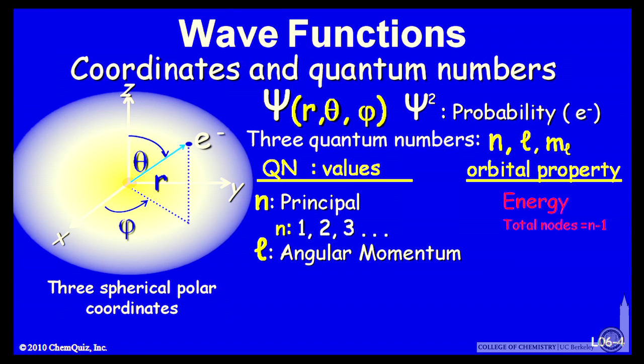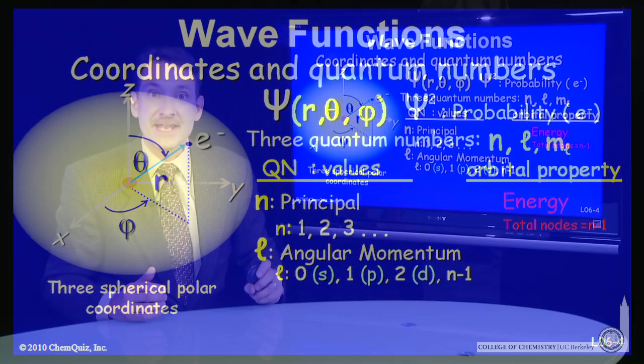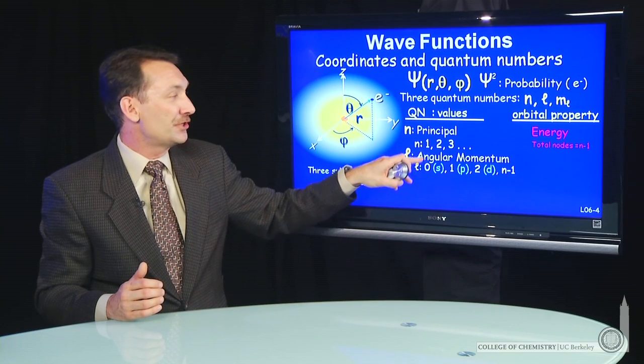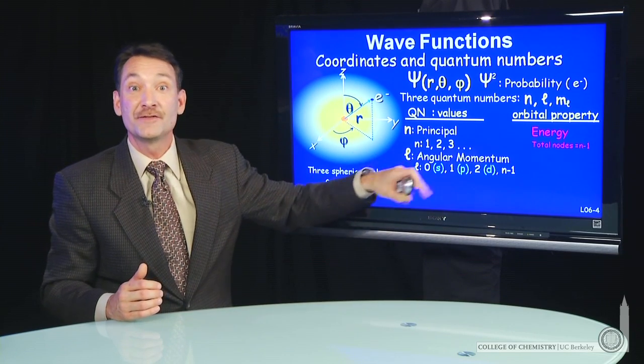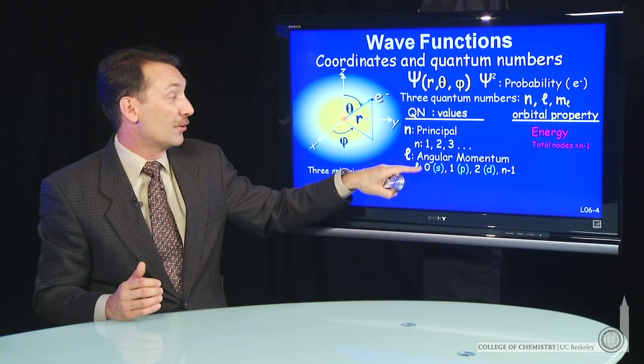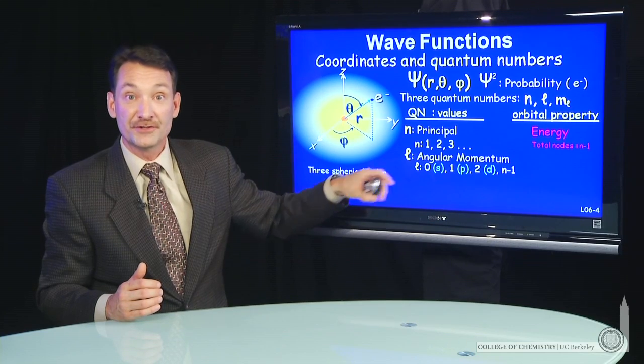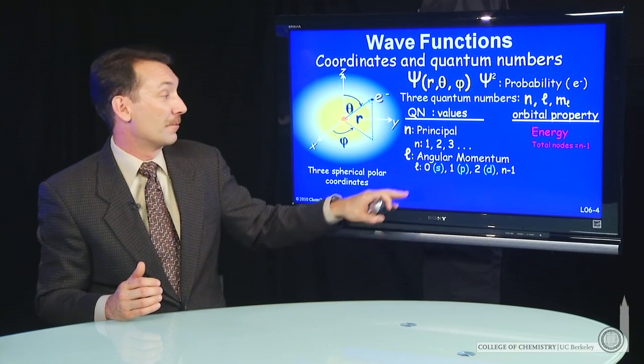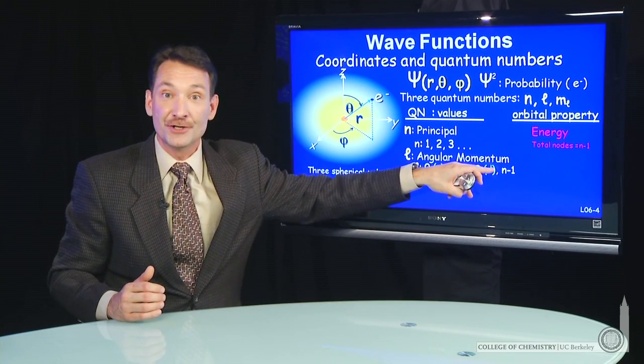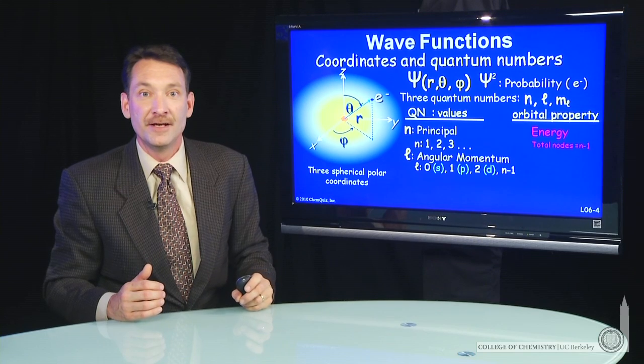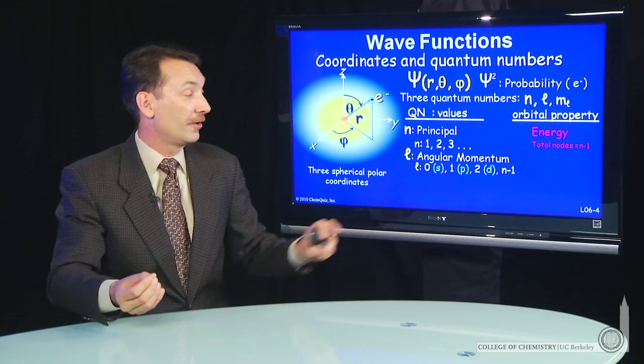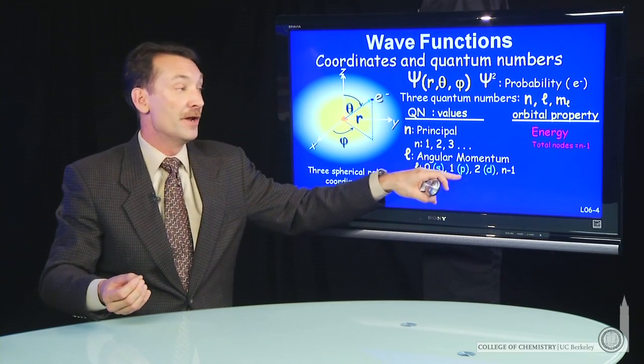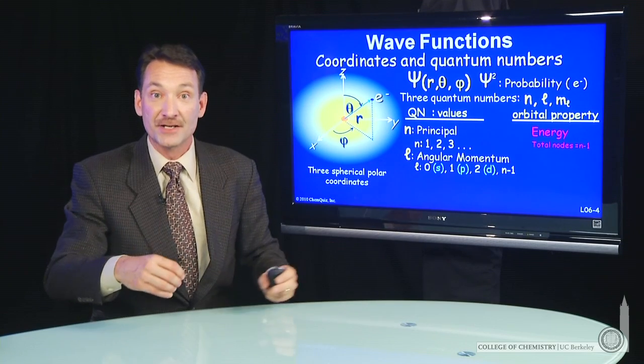Second quantum number, l, the angular momentum quantum number, has values that depend on n. So the larger n, the more values of l you have. So l starts at zero. Now it's our first zero value quantum number. And it counts up in integers up to n minus 1. So if n is 3, l could be 0, 1, or 2. That's n minus 1.